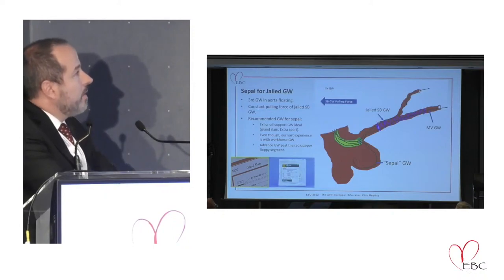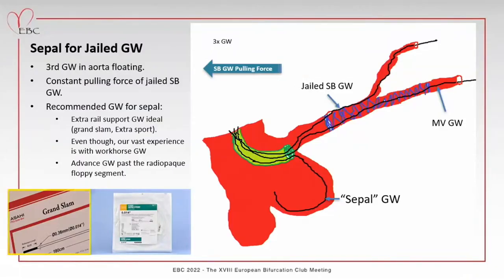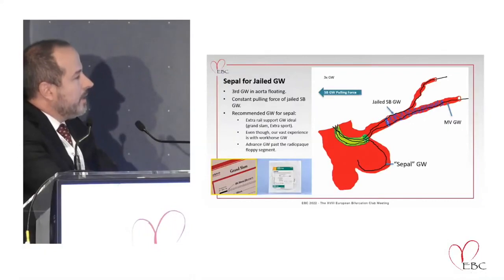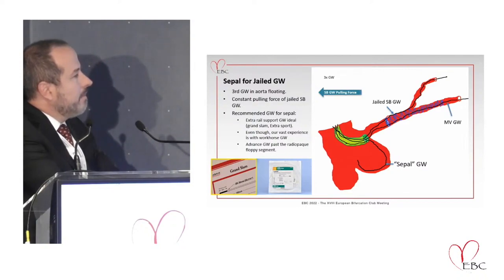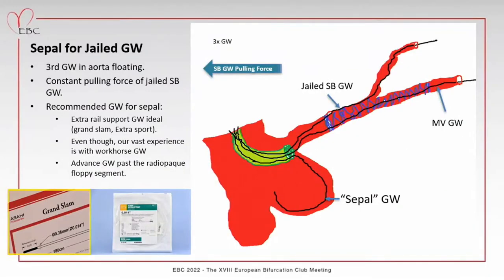We recommend a third guide wire, and along the way we have found that using an extra rail guide wire is better — for example, the Grand Slam guide wire or an extra support guide wire — because of the pulling force and the counter-force that the guide catheter places on it. It's better to have a stronger rail guide wire.